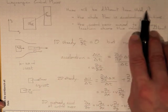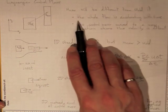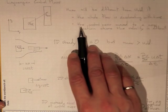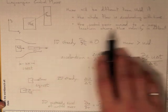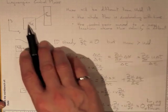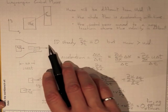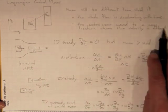So U_new will be different from U_old if the whole flow is accelerating with time, so everything's accelerating and changing, or if the control mass moved from an area where the velocity was low to a new location where the velocity was higher, or lower, but different.